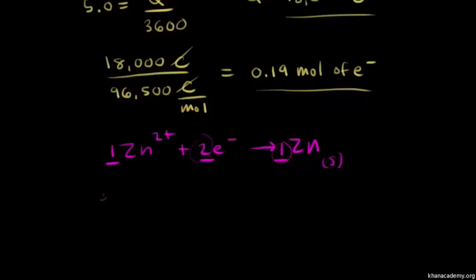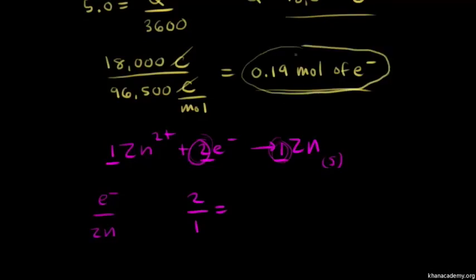So let's set up a proportion to figure out how many moles of zinc are produced. We'll put electrons over solid zinc. So we have a mole ratio of two to one. And then on the right side of our proportion, we know that 0.19 moles of electrons were forced through our cell. So we can write down here 0.19 moles of electrons, and that would be over x. And x represents the moles of solid zinc.